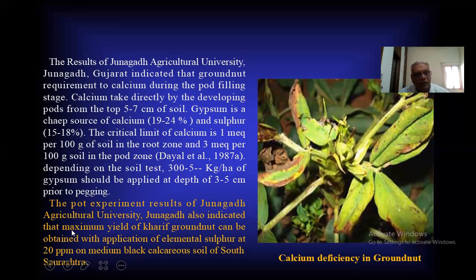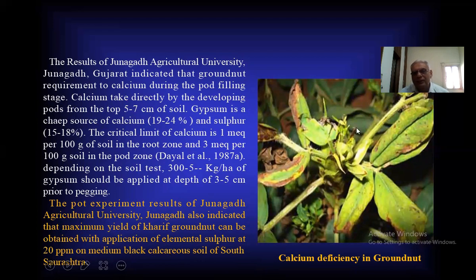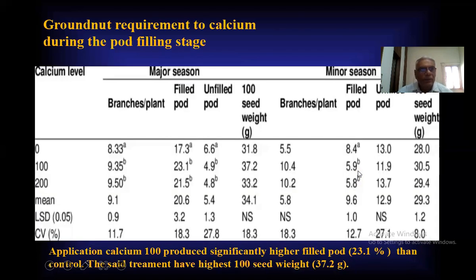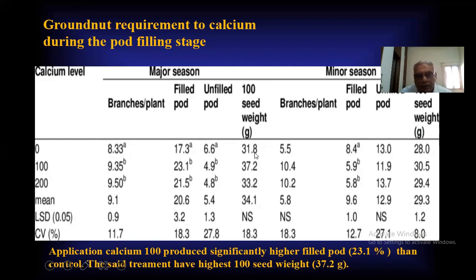The pot experiment results of Junagadh Agricultural University also indicate that maximum yield of Kharif groundnut can be obtained with the application of elemental sulfur at 20 ppm on medium-black calcareous soil of Saurashtra. Here you can see the calcium deficiency in groundnut. Groundnut requires calcium during the pod-filling stage. Application of calcium at 100 mEq produced significantly higher pod yield of 23.1 compared to the control. The same treatment had the highest 100-seed weight of 37.2 g compared to other calcium levels.